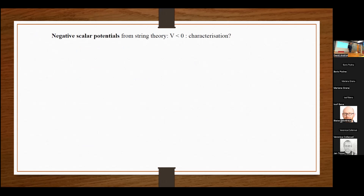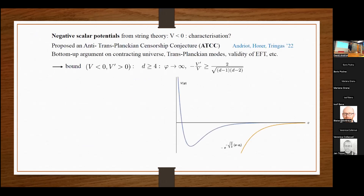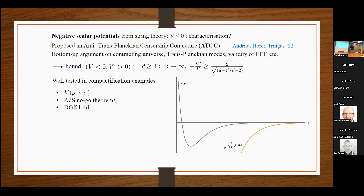More recently, we characterized negative scalar potentials. Since the question is what type of scalar potential you can get from string theory, we also ask this question for negative potentials. We had this anti-TCC: running the same argument, we got a similar bound. If you have a negative potential — which you often get in string theory — there should be a bound of the same kind: your potential should go to zero above the same exponential in the asymptotics. It's the same rate that appears. We checked this in several examples, DGKT in particular, and it works.